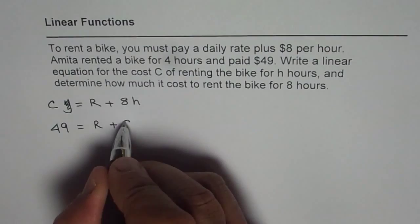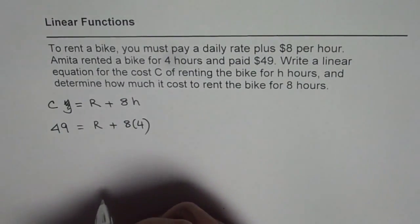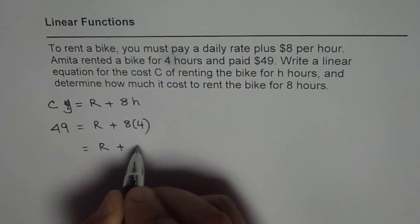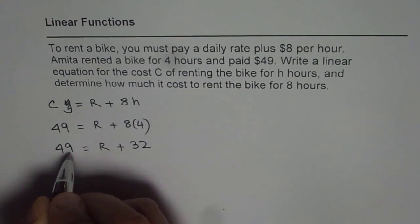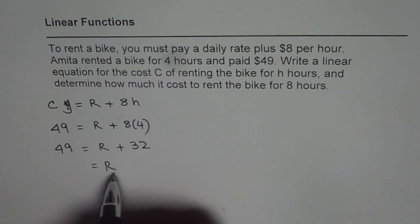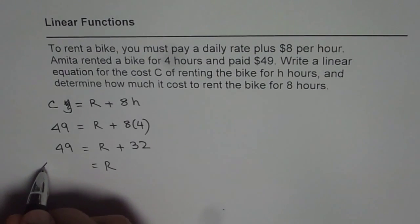So we will add 8 times 4. So that gives us rate plus 32 equals to 49 and R, the fixed cost, right? Daily rate, that means a fixed cost, it is not a variable rate, will be 49 minus 32.